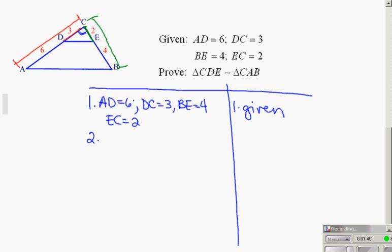Now I need to get that CA and CB into my proof. So I'm going to go back to parts to whole. And I'm going to say that CA is equal to CD plus DA, and I'm going to say that CB is equal to CE plus EB.